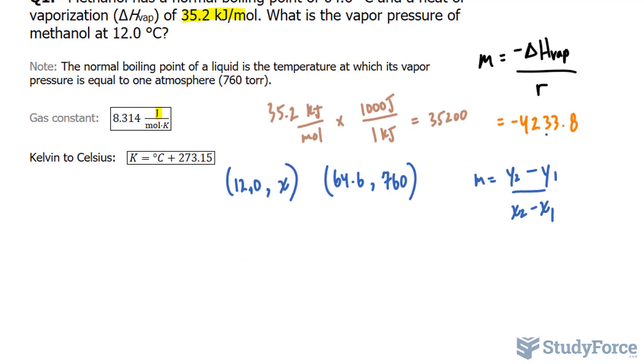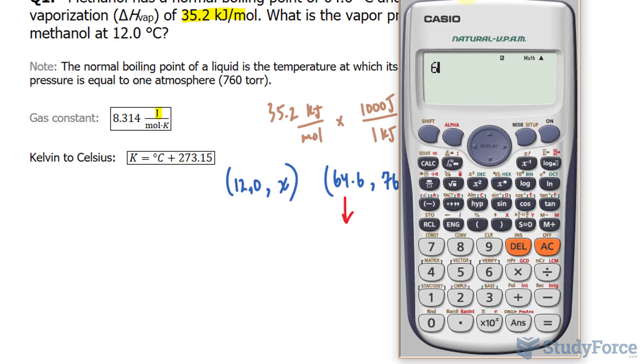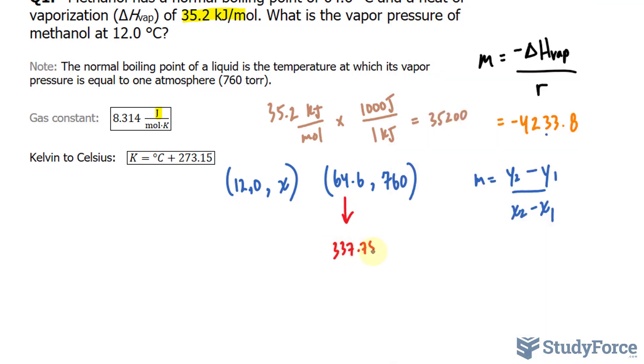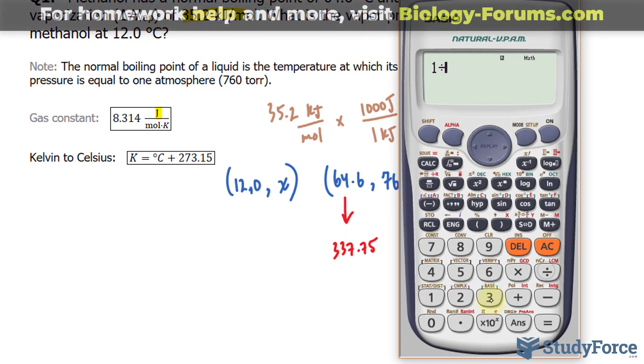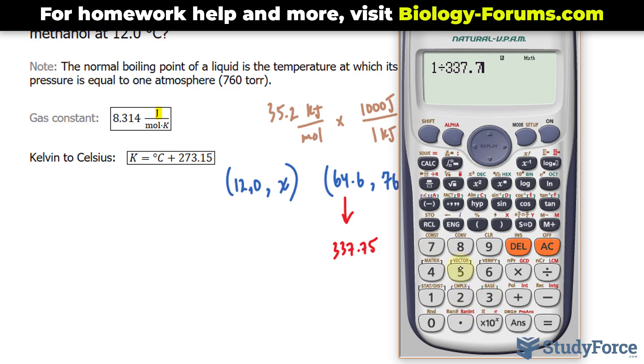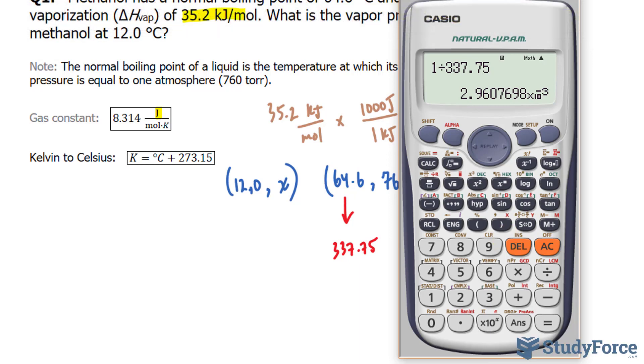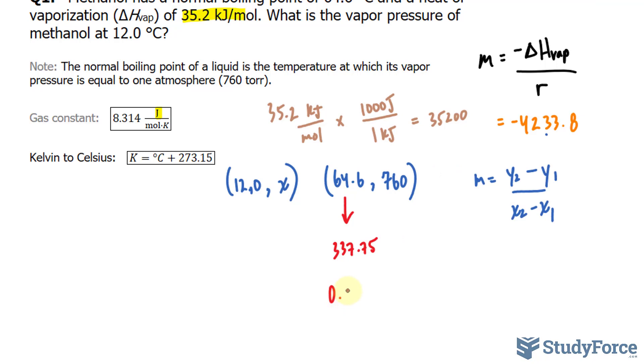Let's do one thing at a time. First, let's change 64.6 into Kelvin using this formula. I'll add 64.6 to 273.15, and we end up with 337.75. And we reciprocate. 1 divided by 337.75 gives us approximately 0.00296.